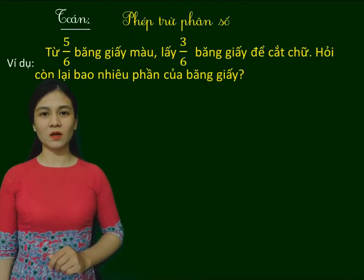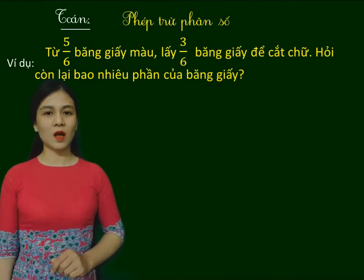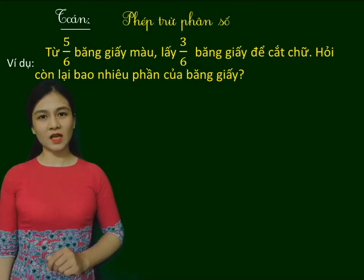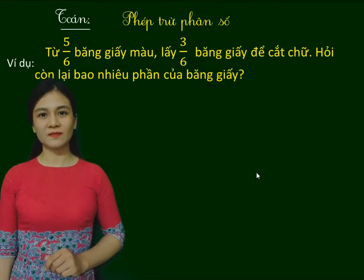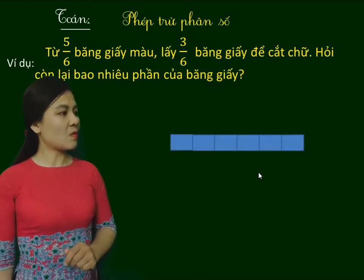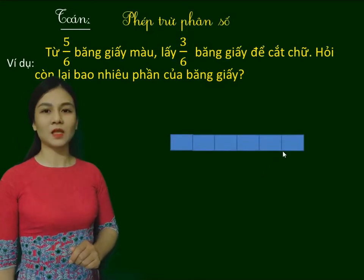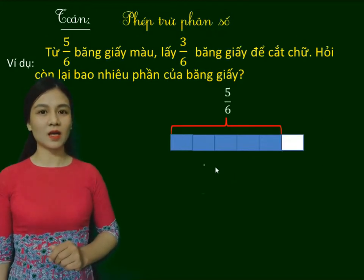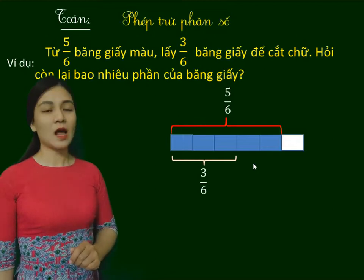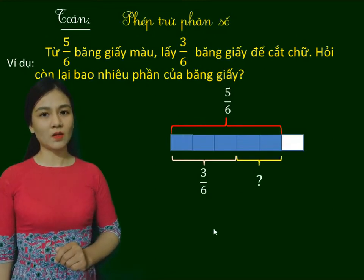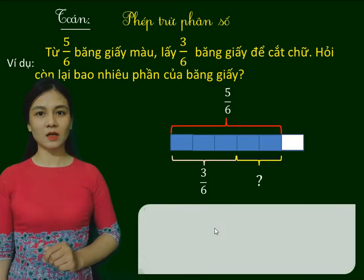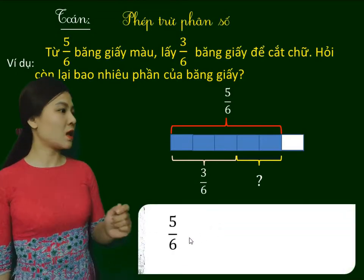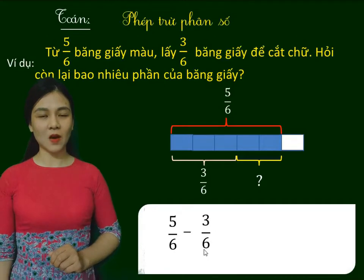Sau đây, cô sẽ hướng dẫn các em tìm hiểu ví dụ. Từ 5 phần 6 băng giấy màu, lấy 3 phần 6 băng giấy để cắt chữ. Hỏi còn lại bao nhiêu phần của băng giấy? Các em quan sát, cô có 1 băng giấy được chia làm 6 phần, và từ 5 phần 6 băng giấy, lấy 3 phần 6 băng giấy để cắt chữ. Vậy, làm thế nào để biết còn lại bao nhiêu phần? Chúng ta sẽ thực hiện phép trừ là 5 phần 6 trừ 3 phần 6.